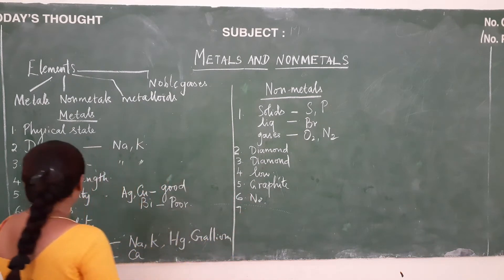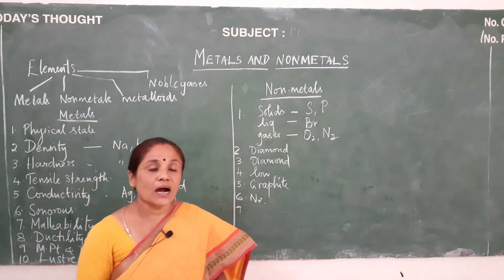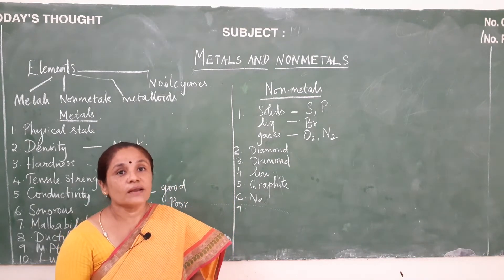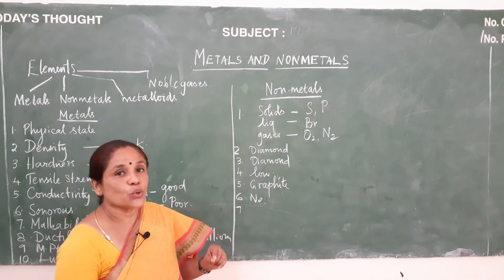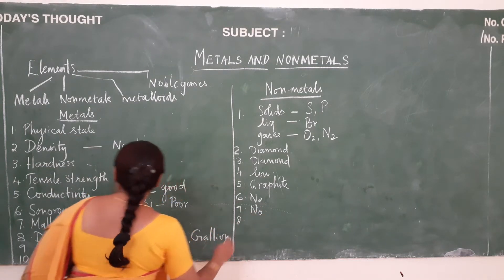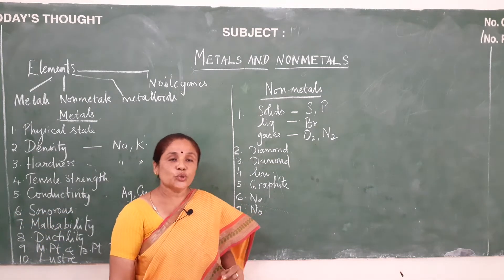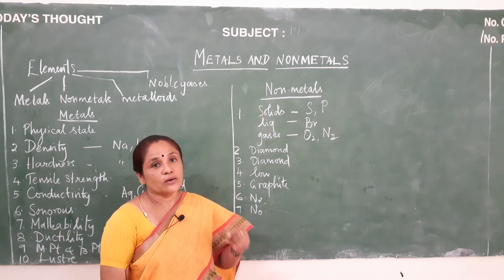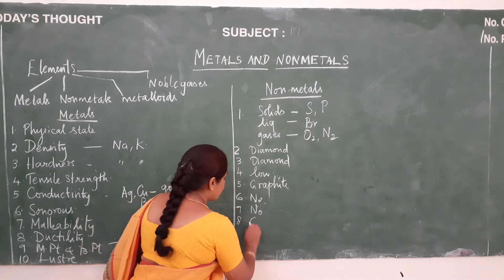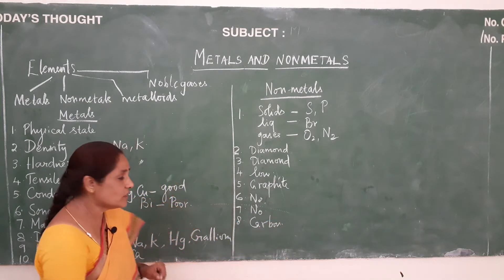The next property is malleability. When nonmetals are hit very hard, they tend to break — that means they are brittle in nature and not malleable; they lack malleability. And ductility: nonmetals generally cannot be drawn into thin wires. But there is an exception — carbon fibres alone can be drawn into very thin wires.